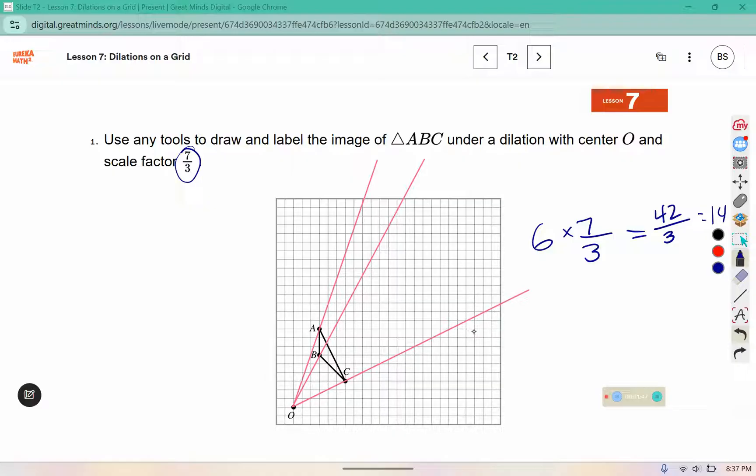So we're going to place C 14 lines down the way. So we've got 1, 2, 3, 4, 5, 6, 7, 8, 9, 10, 11, 12, 13, 14, and on that pink line. So this is where C prime will go.